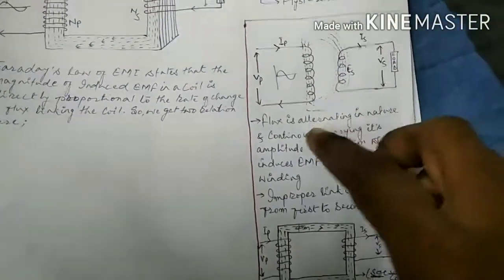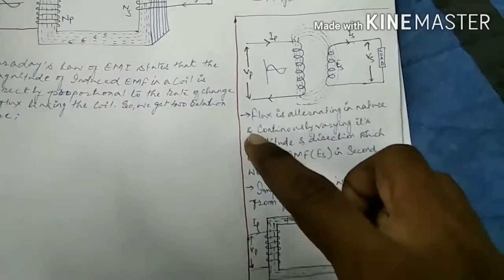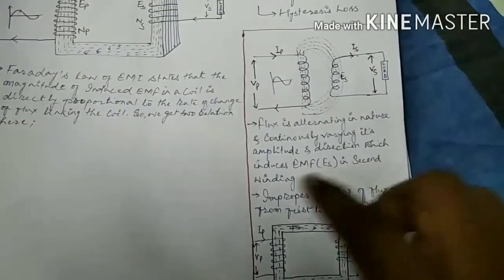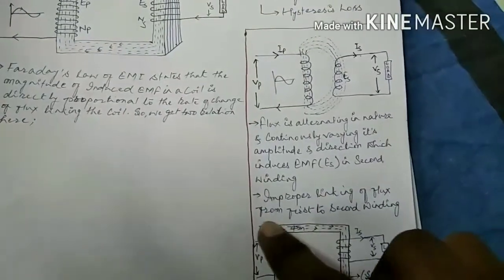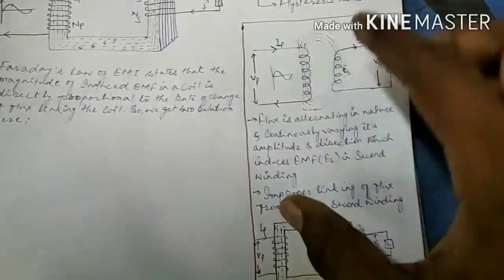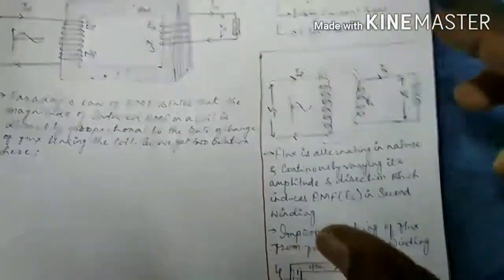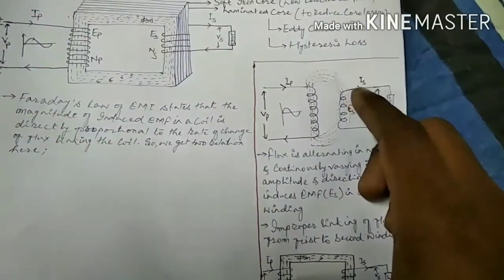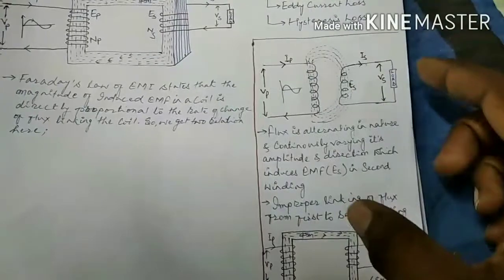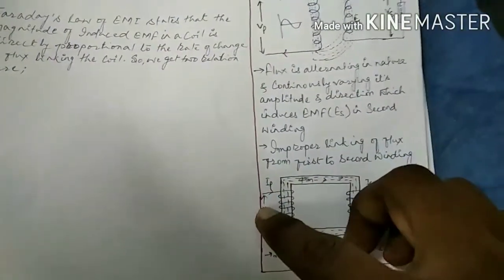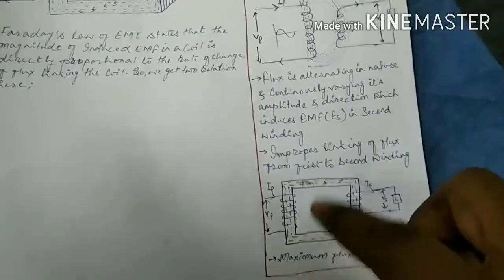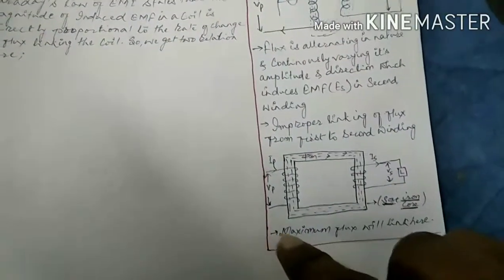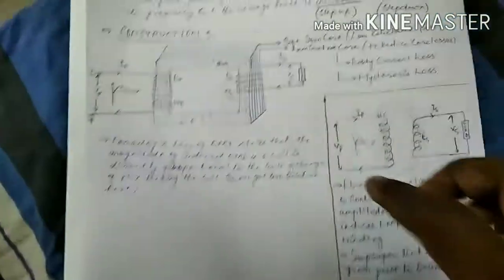Two points to remember here: first, the flux is alternating in nature and continuously varying its amplitude and direction, which induces EMF ES in the second winding. Second, there is improper linking of flux from first to second winding, because air is not a good medium for flux transfer — only a small portion of flux will link. To overcome this problem, we put both windings on a core material, so the maximum flux produced will link with the secondary side.